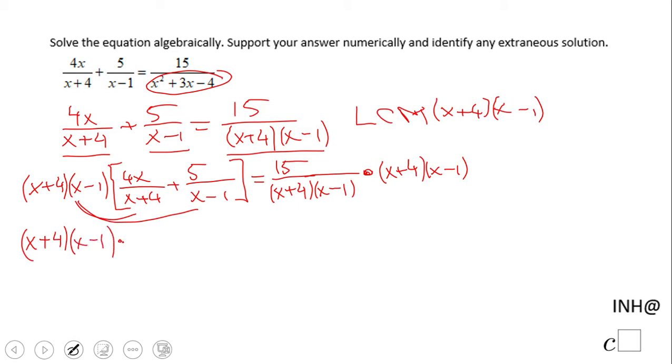We're going to have x plus 4 times x minus 1 times 4x over x plus 4, plus x plus 4 times x minus 1 times 5 over x minus 1. And on the other side let's keep it like this for a moment. However, some of you may notice that we can simplify already, but we're going to simplify in the next step.